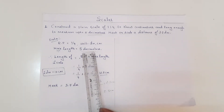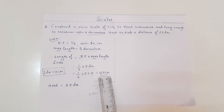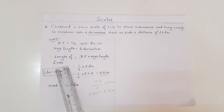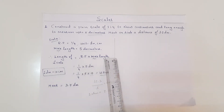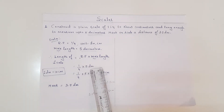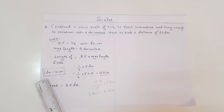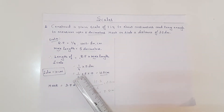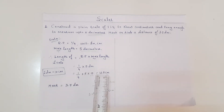How to convert 5 decimeters to the required length in centimeters: length of scale equals RF into maximum length. So, 1 by 4 into 5 decimeters. Since 1 decimeter equals 10 centimeters, that is 1 by 4 into 5 into 10, which equals 12.5 centimeters.